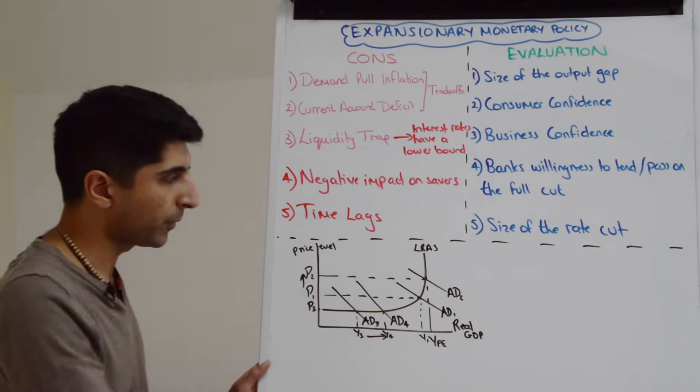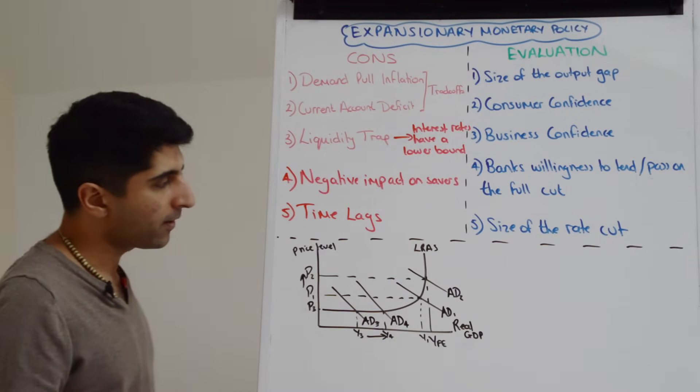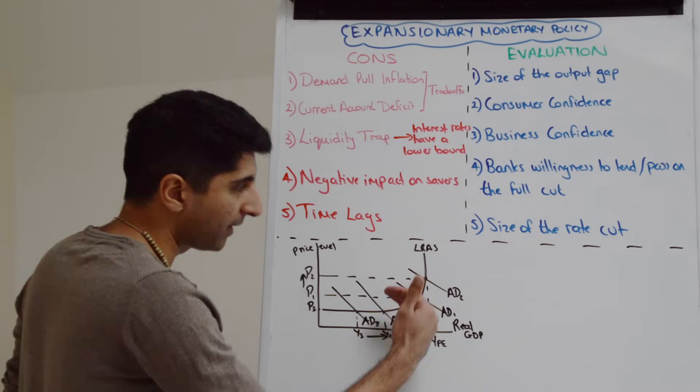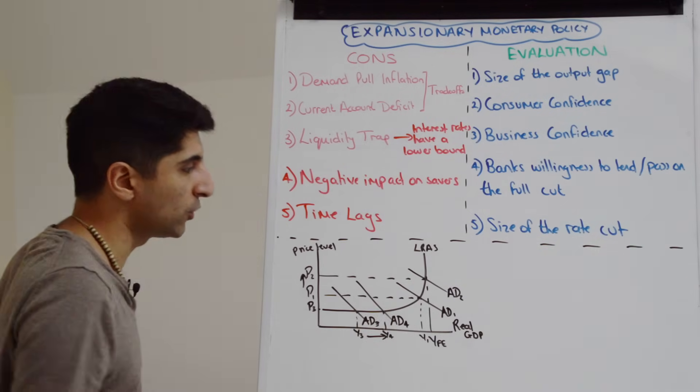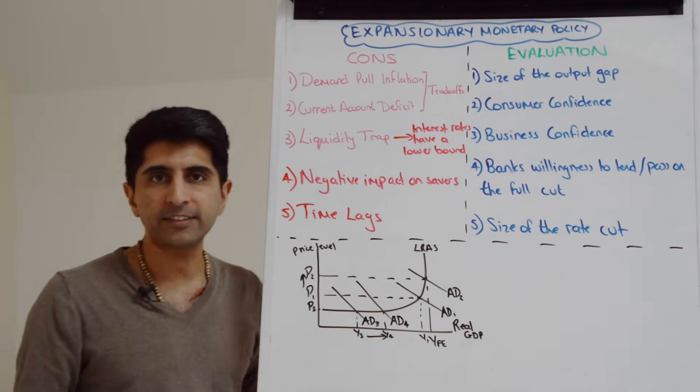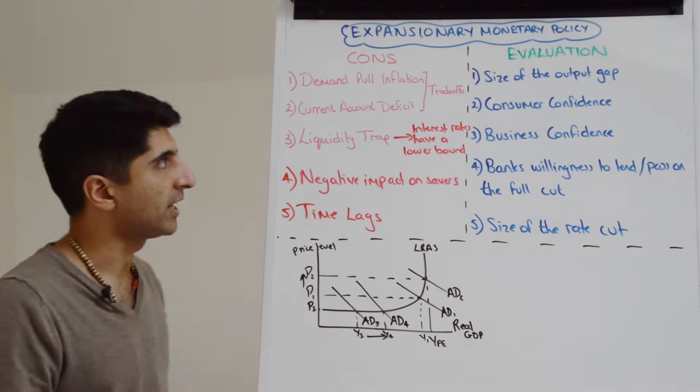I've shown that here on this diagram. We can see that if expansionary monetary policy is successful, if lower interest rates work, then aggregate demand is going to shift to the right from AD1 to AD2. And yeah, we might see higher growth and lower unemployment, but there could be this side effect of higher demand-pull inflation.